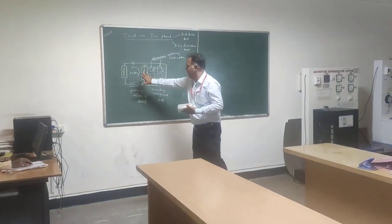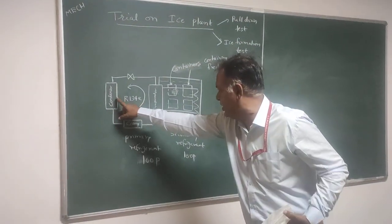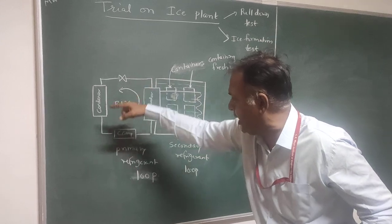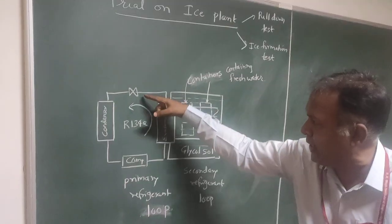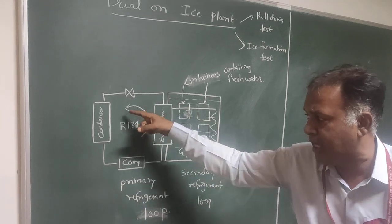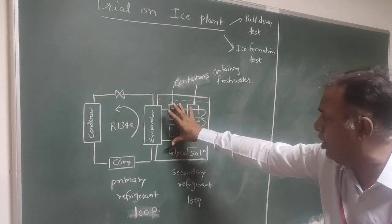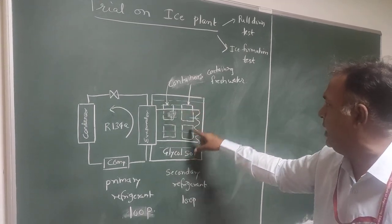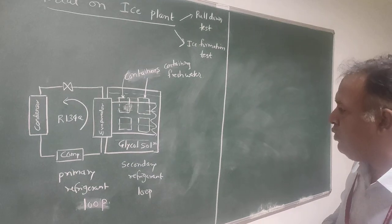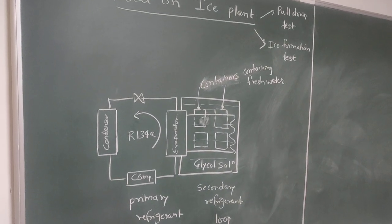As discussed, this is the schematic of the ice plant refrigeration system. There is a condenser, an evaporator, and a primary circuit wherein the refrigerant — R134A — flows through the compressor, evaporator, expansion device, and condenser. The glycol solution is housed in the container and the containers hold fresh water for ice formation. This is the overall schematic. Now let us do the calculations.